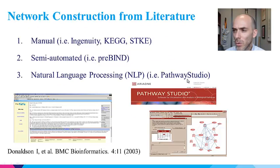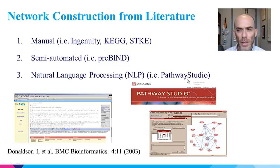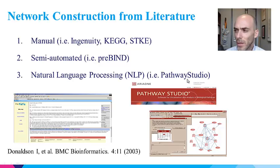However, there are other ways to build networks from the literature. Here I'm showing two examples. The first is semi-automatic extraction from publications, where the software identifies abstracts that potentially have interactions, and then a user validates and extracts the interactions from the abstracts manually, assisted by software that highlights protein names and potential interaction types. There are also completely automated methods to extract interactions from the literature using natural language processing.